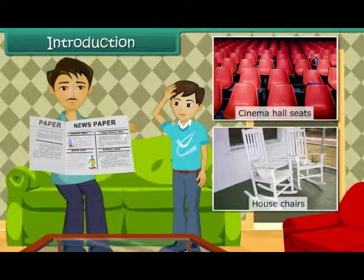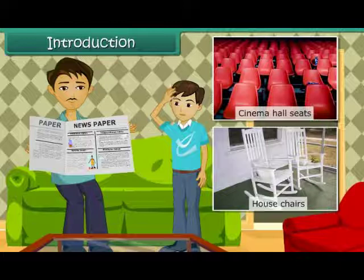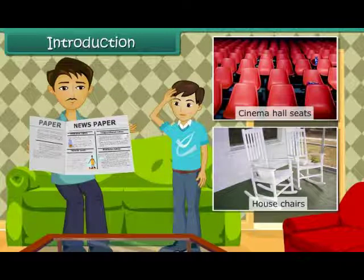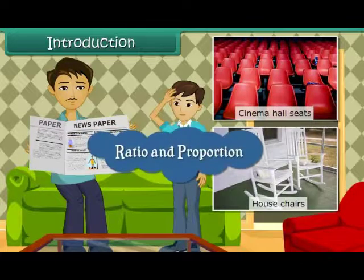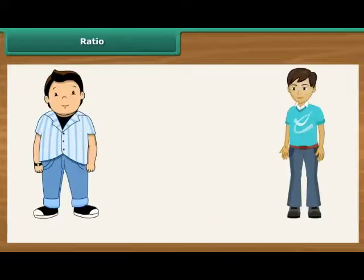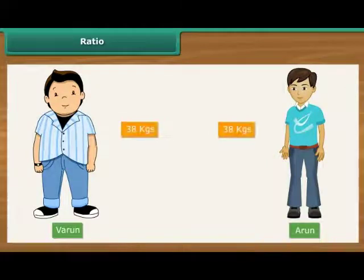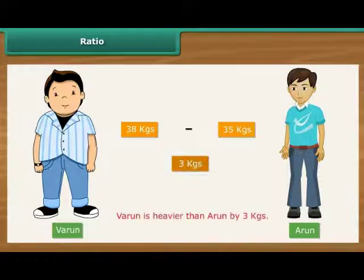How did Vivek's father arrive at this conclusion? Vivek's father applied the concept of ratio. In this lesson, you will learn about ratio and proportion. We usually compare quantities and values by calculating their difference. For example, suppose the weights of two friends, Varun and Arun, are 38 kgs and 35 kgs respectively. We say that Varun is heavier than Arun by 38 minus 35, that is 3 kgs.